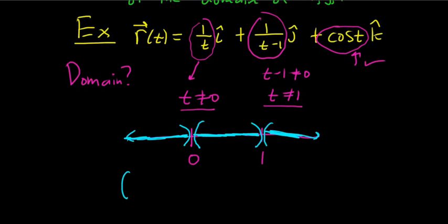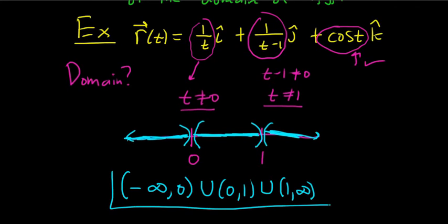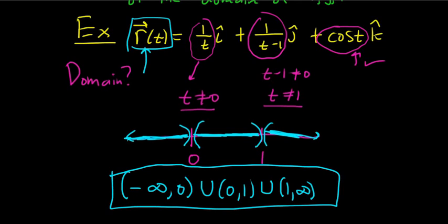Writing the domain in interval notation, starting from the left: (−∞, 0) ∪ (0, 1) ∪ (1, ∞). For this vector-valued function to exist, each component function has to exist — so it's really common sense why we take the intersection.